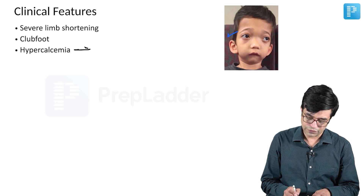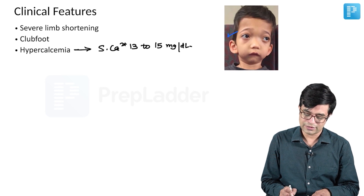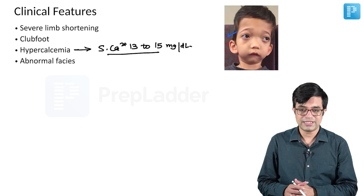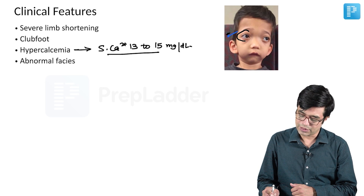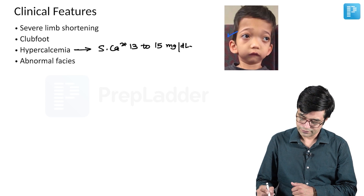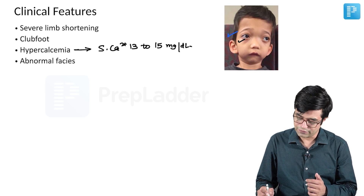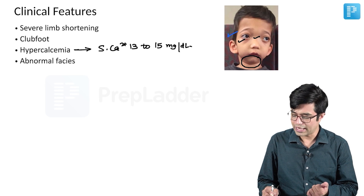Nelson states that serum calcium commonly ranges between 13 to 15 milligrams per deciliter in these patients. Normally serum calcium is 9 to 11 mg/dL, so these children will have serum calcium of 13 to 15. Abnormal facies will be seen as you can see in the picture. The abnormal facies basically involves a mild degree of proptosis. Some of these children, not all, will have hypertelorism.